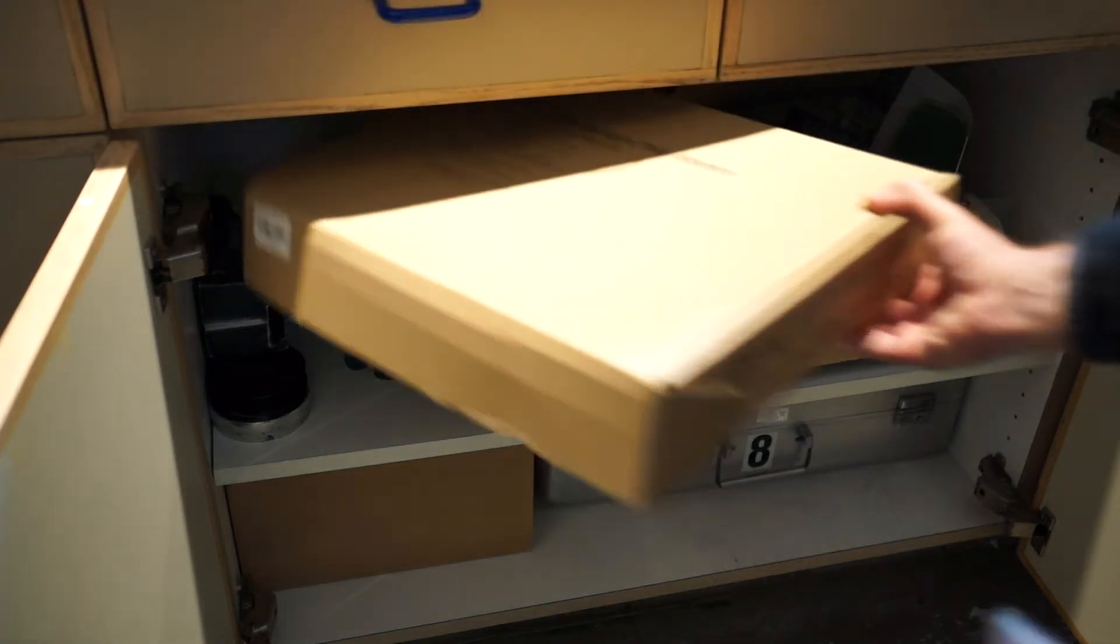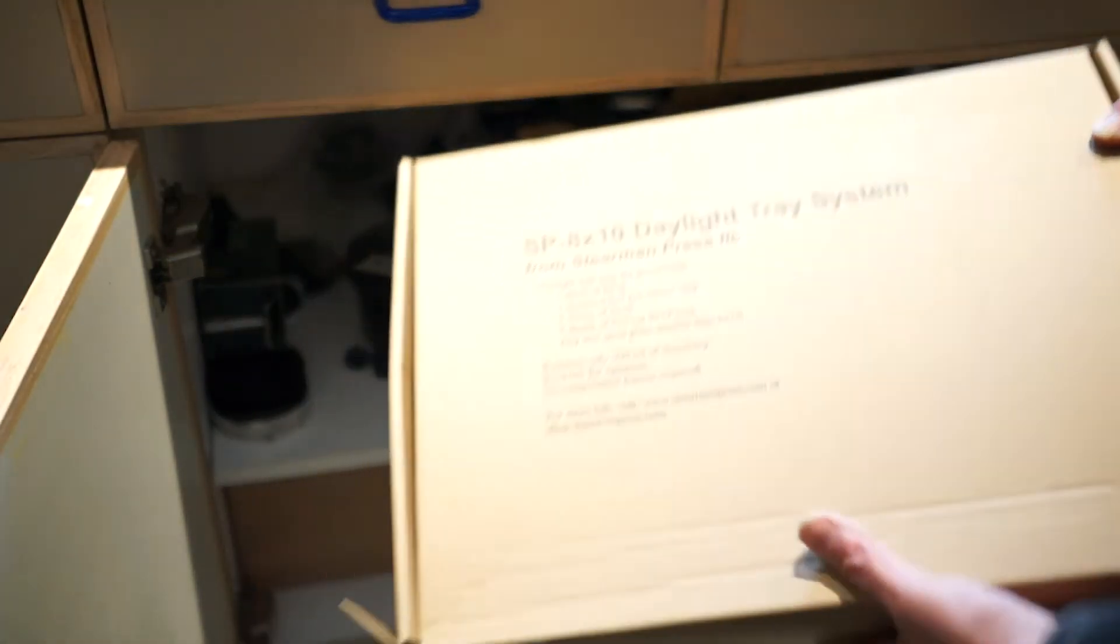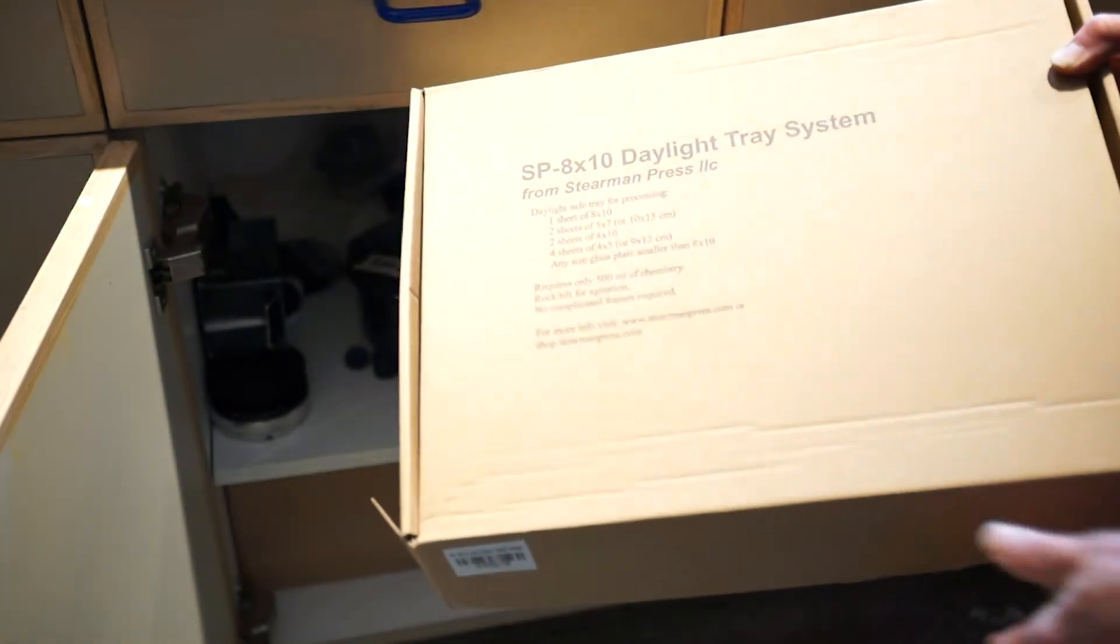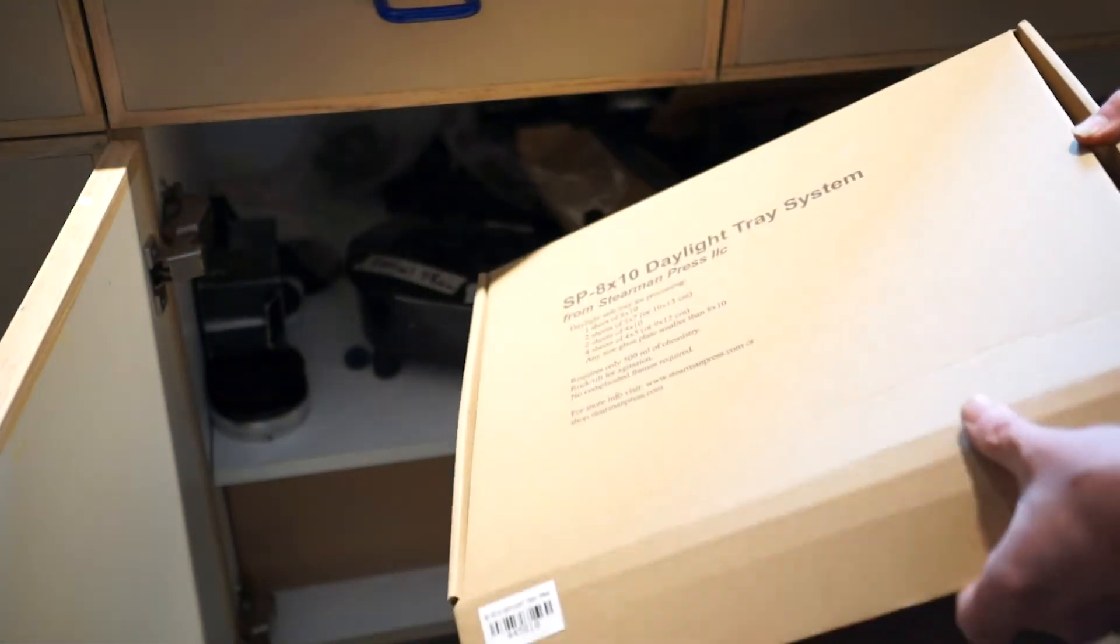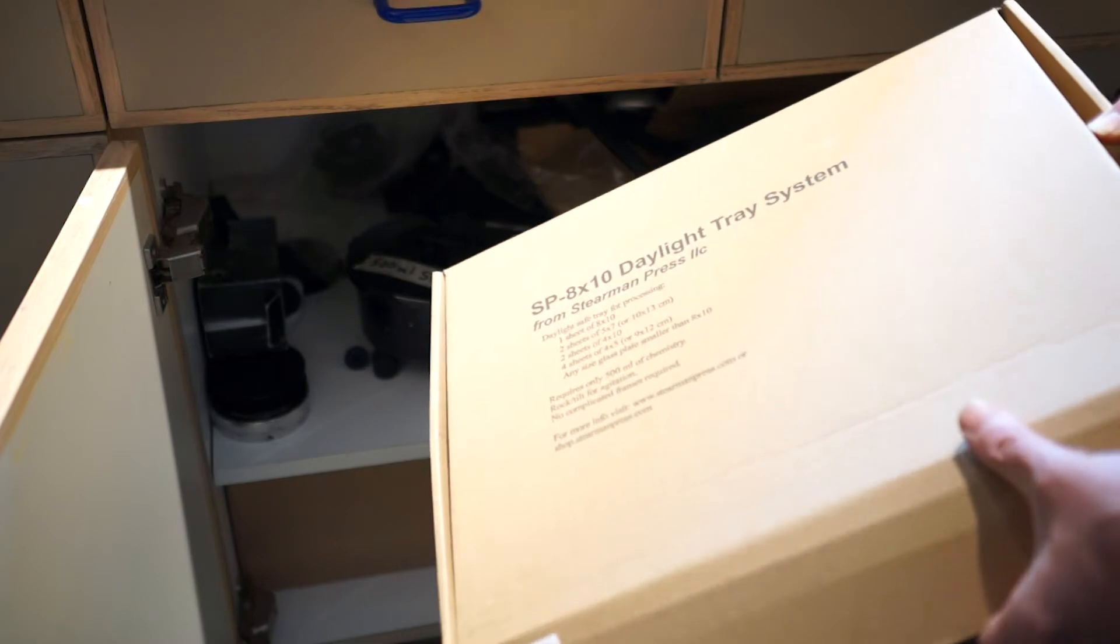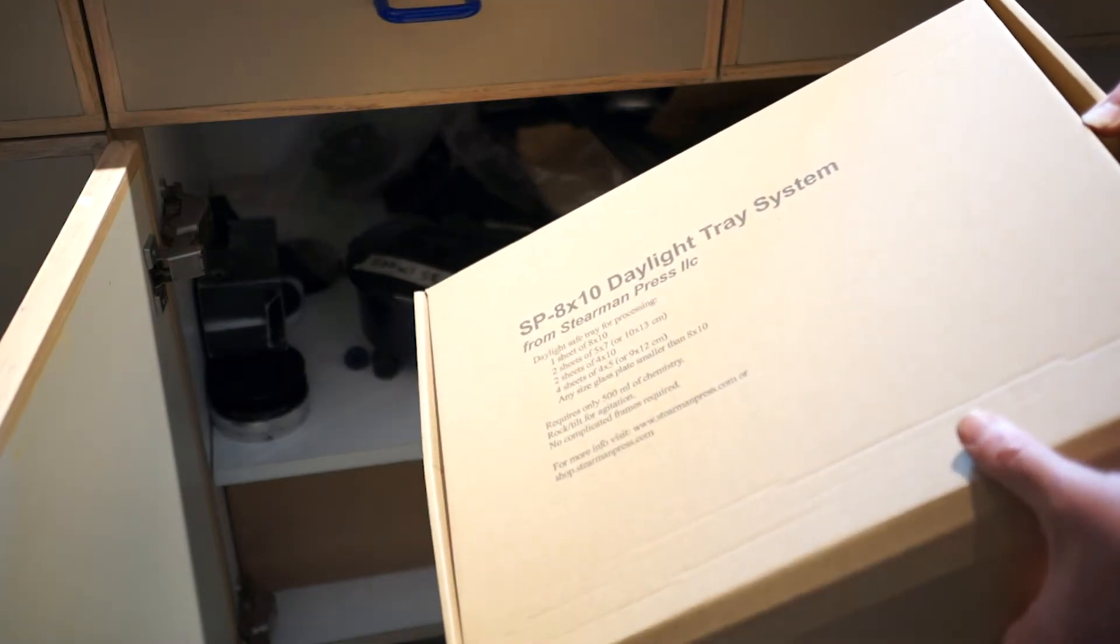Underneath the film drawers is a box with our SP 8x10 Daylight Tray Processing System that also does 5x7 and 4x5 film.